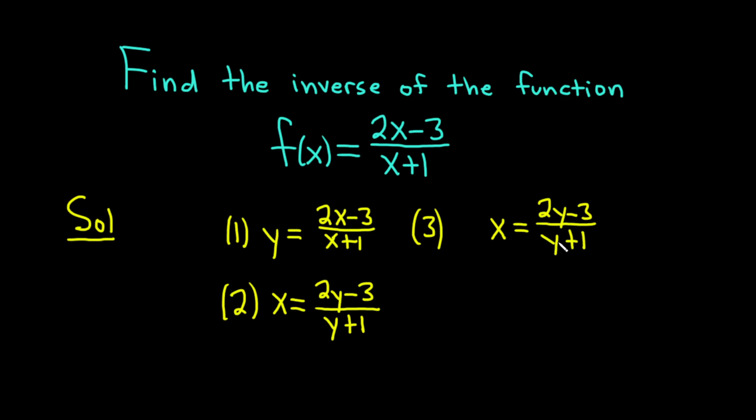Right away, we can see there's a problem because there's a y in the denominator and there's also one in the numerator. So a good first step is to clear the fractions. We can do that by multiplying both sides by y plus 1.